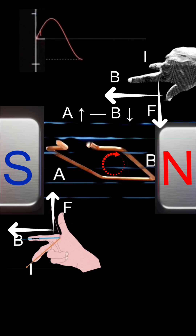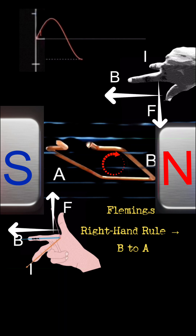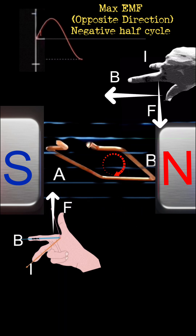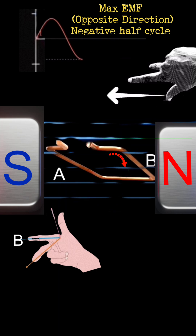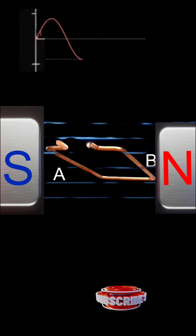As the loop continues its rotation, B moves downwards and A moves upwards. By Fleming's right-hand rule, the induced current now flows in the opposite direction, from B to A. So the EMF is maximum but opposite in polarity.